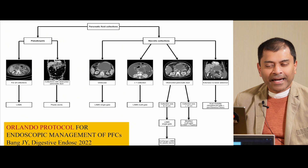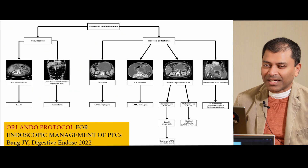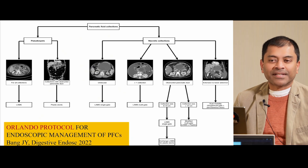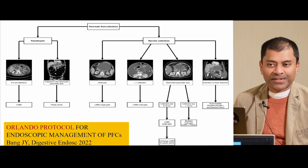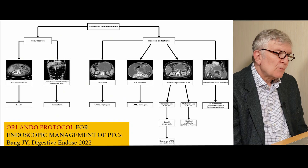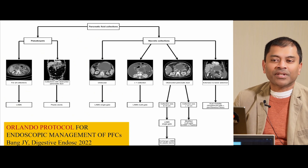If you've got a disconnected duct and the collection is only six to eight centimeters and you place a lumen-apposing metal stent, what happens is when you take the stent out the cavity collapses. There's no space left to exchange and place a plastic stent. So if I'm sure a patient has a disconnected duct and the collection is only six or eight centimeters, I will place double pigtail plastic stents primarily at the index session so that I don't have to go back and struggle with the exchange process.